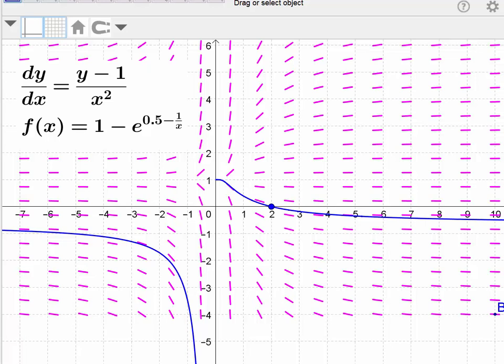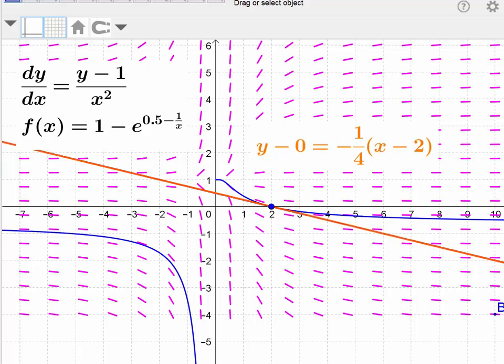Again, I'm assuming that previous lessons would allow you to get to this point on the FRQ of solving for that particular solution that goes through 2,0. Notice how smoothly the curve flows through the slope field. Here is the tangent line that we just solved for. And I'm going to go ahead and hide the slope field.